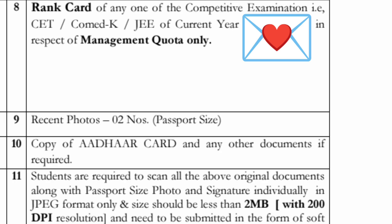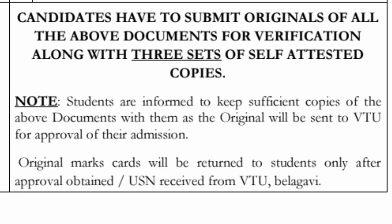Most importantly, COMED-K students for the 2025 batch must bring their COMED-K rank card. Management quota students should also bring their JEE rank card or any other exam rank card. Bring two recent passport size photographs and a copy of your Aadhaar card. All students are requested to bring scanned copies of all documents along with passport photograph and signature individually in JPEG format, with no file exceeding 2 MB, submitted as soft copies in a pen drive. All candidates must submit originals along with three sets of self-attested copies. That's all the update for COMED-K students — thanks for watching, please subscribe to the channel for similar updates on colleges in Karnataka. Take care and bye.